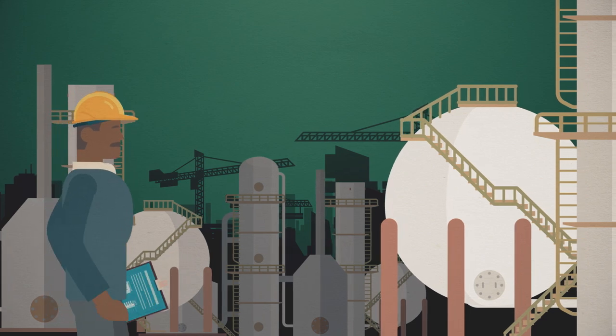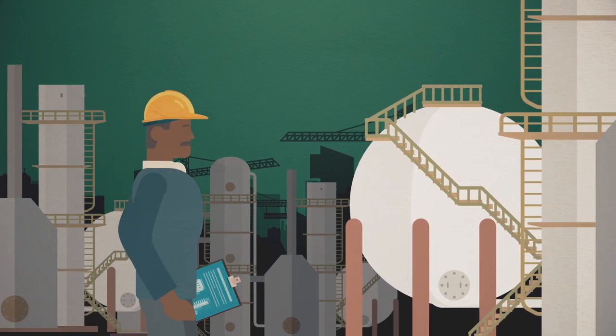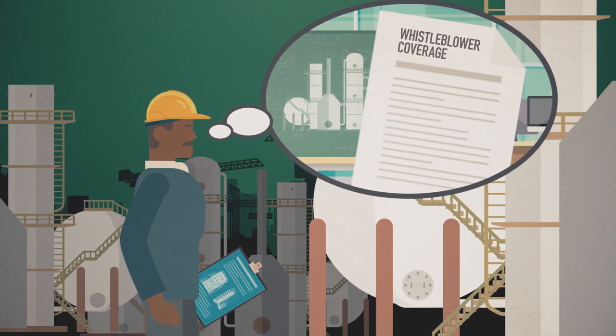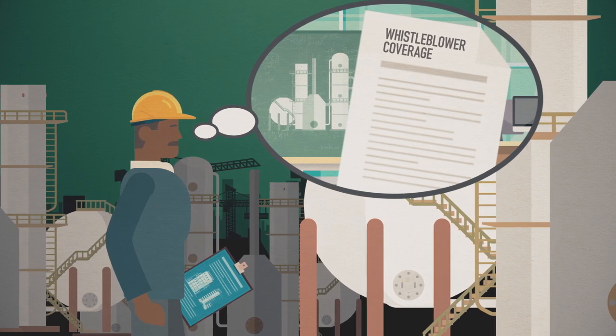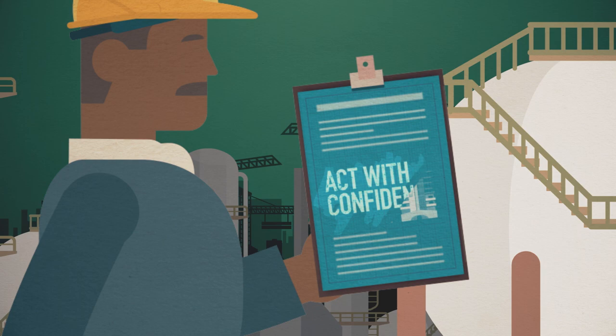It's good to know you've got a safety net when acting to the highest standard of professionalism and meeting your ethical responsibility as an engineer or geoscientist means you may be putting your career at risk. Your secondary professional liability coverage allows you to act with confidence.